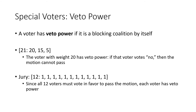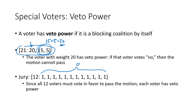Another type of special voter is a voter with veto power — similar to a dictator. A voter with veto power is one that, if they vote no, nothing can pass. In other words, they are a blocking coalition all by themselves. For example, in the system [21: 20, 15, 5], the 20-weight voter can't pass a motion alone (not a dictator), but if they vote no, the other voters have only 15 plus 5 = 20 votes — not enough to pass anything. So the 20-weight voter has veto power. In a jury system with 12 voters each worth 1 and a quota of 12, any single juror voting no prevents a guilty verdict, so every juror has veto power.